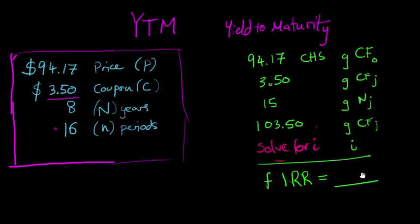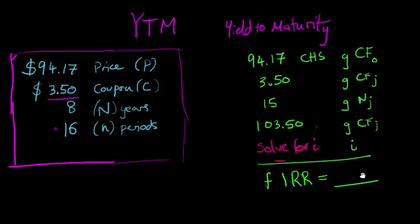So let's go ahead and do that. So IRR is in orange. So we're going to put F, the orange function, IRR. And the internal rate of return is exactly 4%, 4.00%.